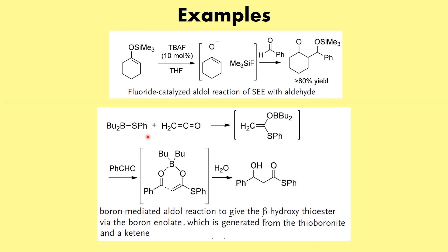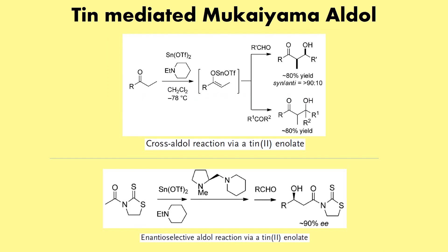Another very important example involves a thioboronite. Whenever this thioboronite is treated with a ketene, what forms is a boron enolate. Once this boron enolate is formed, it undergoes aldol condensation with the aldehyde to give the respective beta-hydroxy thioester. This is a very important example to remember.